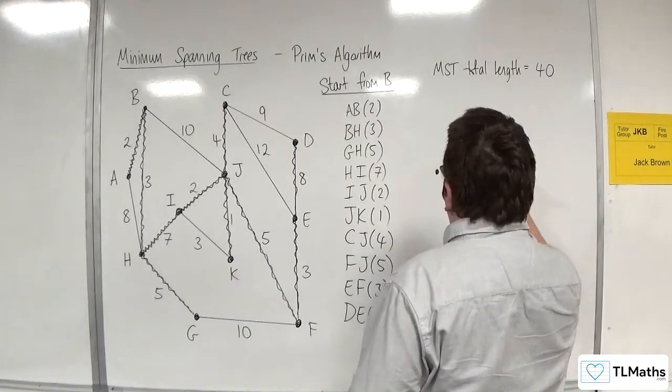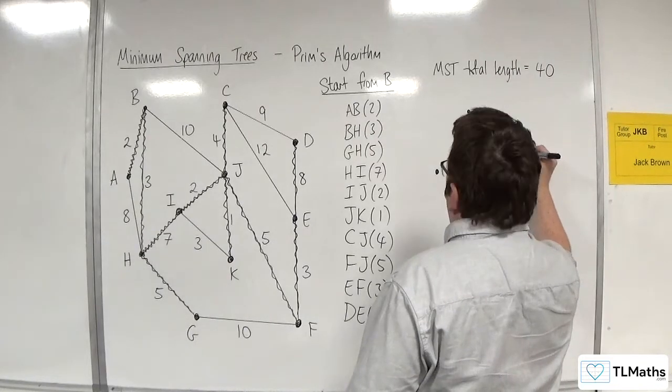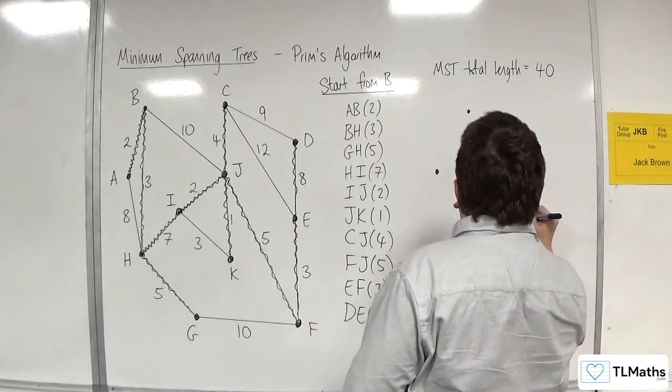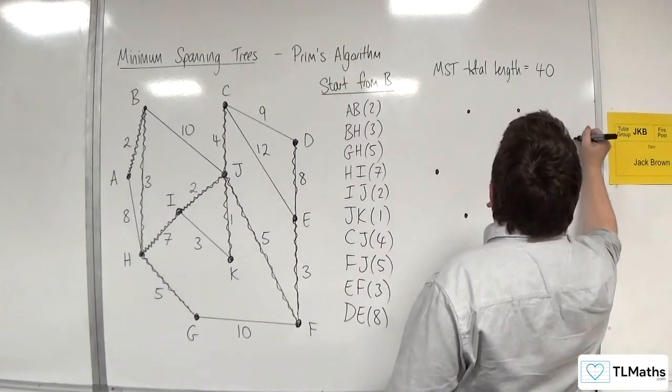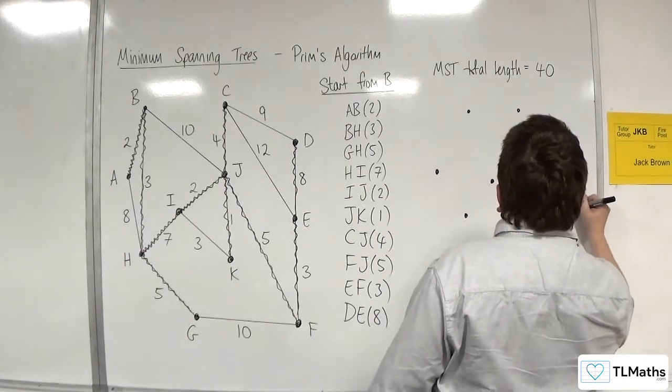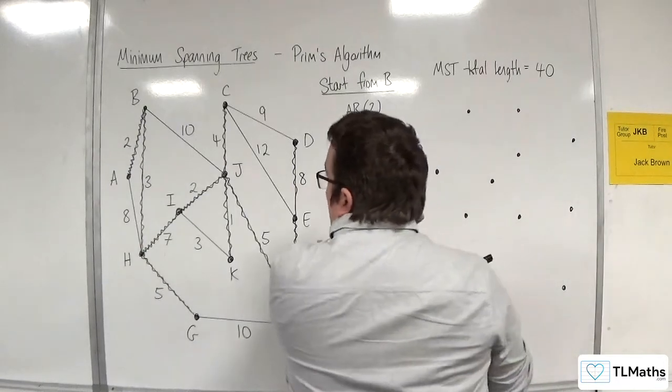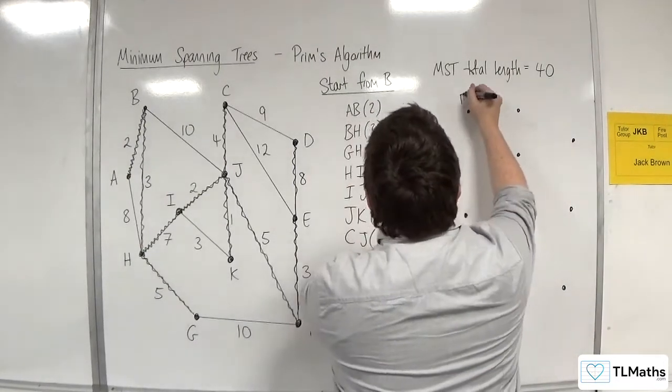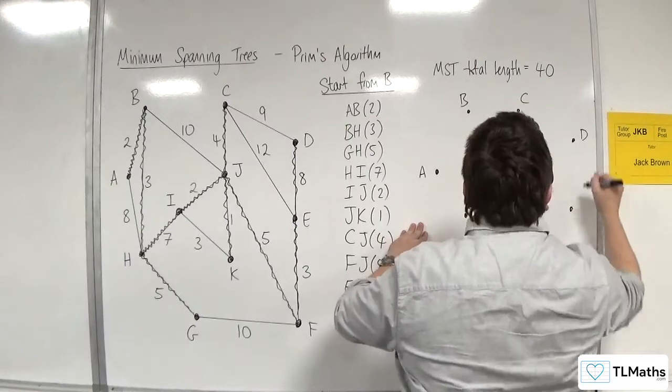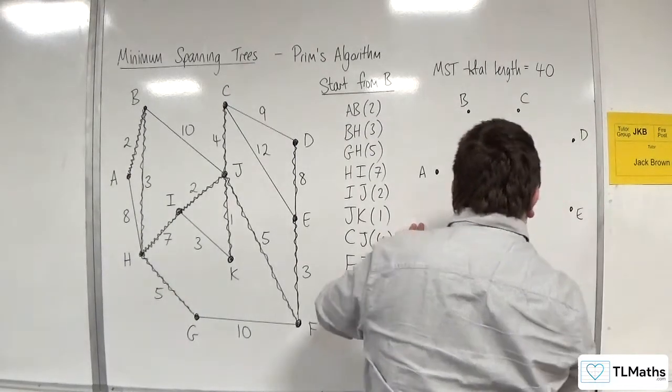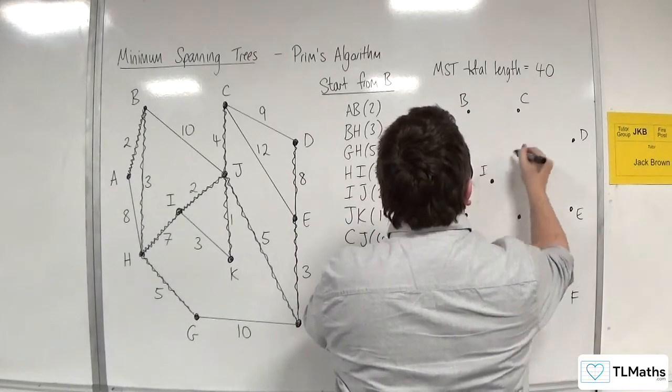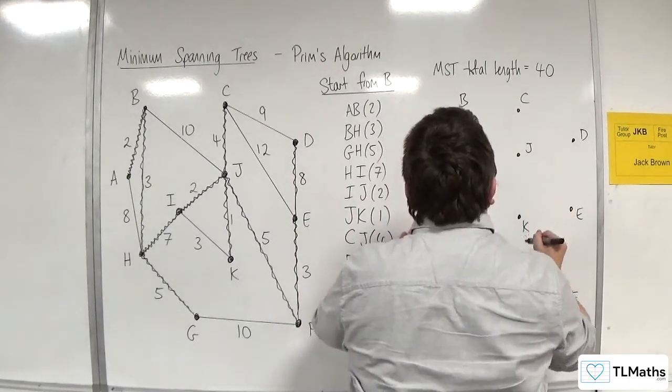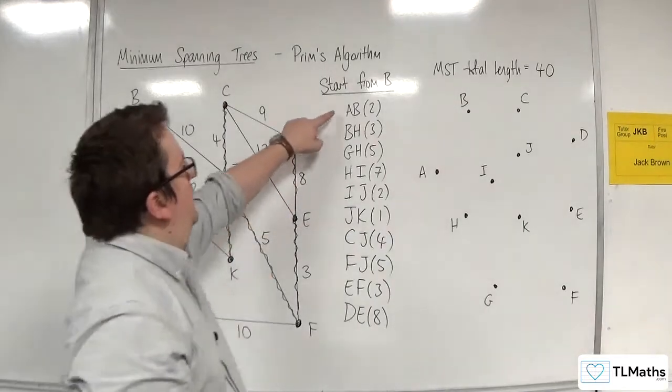That one, then there's I, J, K's down here somewhere. So A, B, C, D, E, F, G, H, I, J, K. All right, so let's run through this.